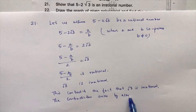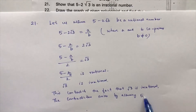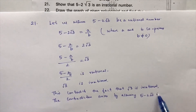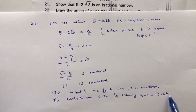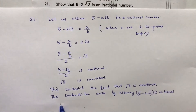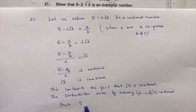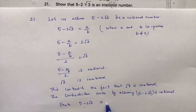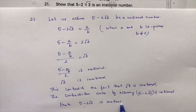Hence, 5 minus 2 root 3 is irrational. In this way we need to prove this.